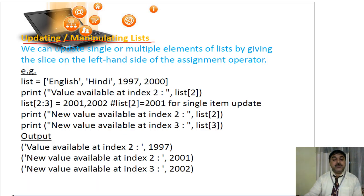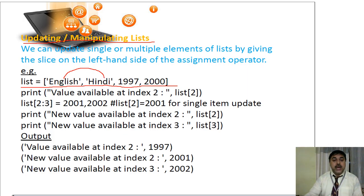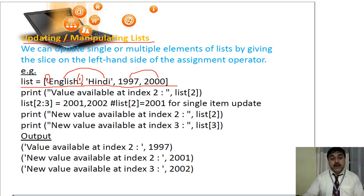And we can slice them — slice means to make it apart as per our requirement, as per how we want to present it. I have taken one list. In this particular list, I have taken English, Hindi, 1997, and 2000. These two are alphabetic values and these two are numerical values. The alphabetical values are given with single inverted commas, and the numerical values have no single inverted comma. So this particular structure can be done in a list.